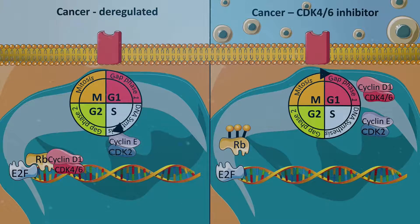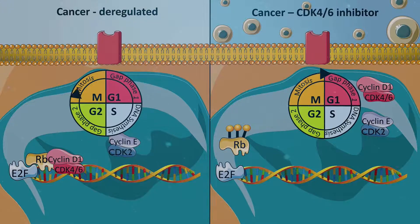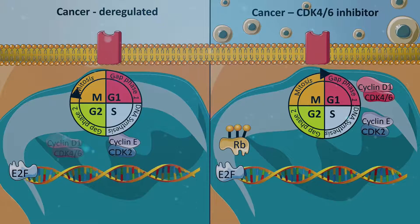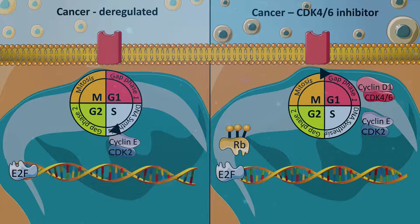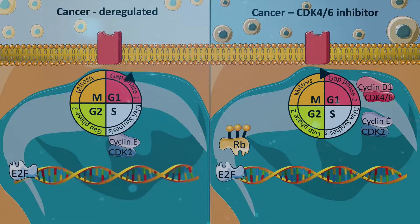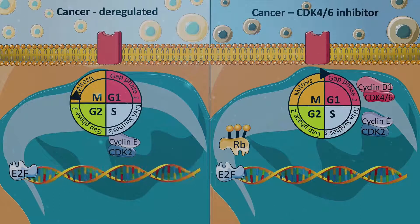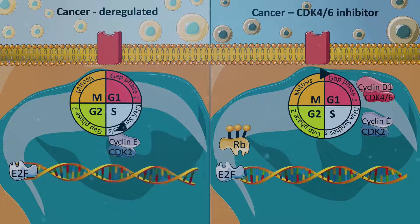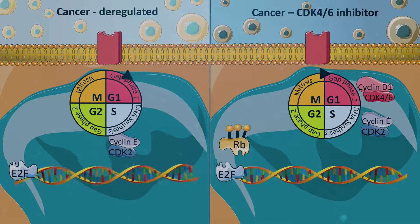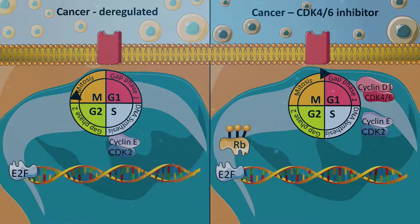In a normal state, the activated retinoblastoma, or RB, tumor suppressor protein inhibits the cell cycle from progressing through the G1 phase. The CDK4-6 cyclin D1 complex mediates the phosphorylation of the RB protein, releasing it from the complex and reduces its inhibitory control on the E2F transcription factor. This causes the cell cycle to progress from G1 to S phase, resulting in further DNA synthesis and cell proliferation.